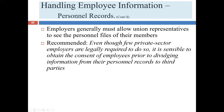Employers generally must allow union representatives to see the personnel files of their members. If your workforce is unionized and employees in the bargaining unit have voted for union representation, the union has the right to see those personnel files. It's a good idea — though not a legal requirement — to let employees know when an employer is going to share information from the personnel file to third parties. Sometimes this comes up in a subpoena scenario. At JC Penney, someone had a practically full-time job just responding to personnel record subpoenas.